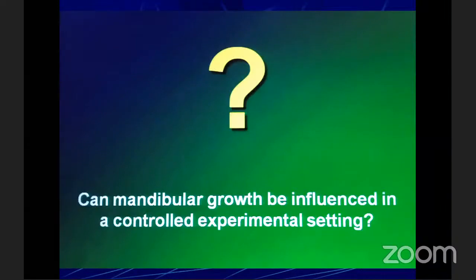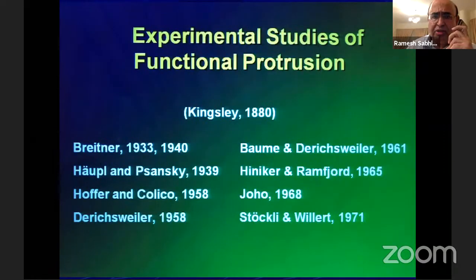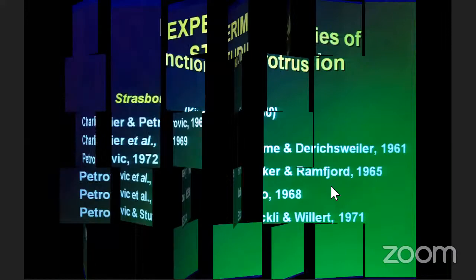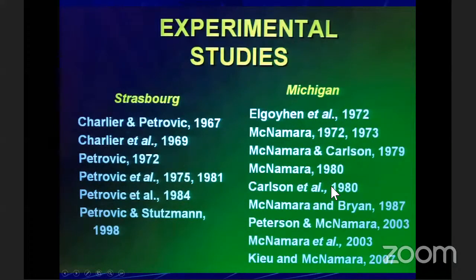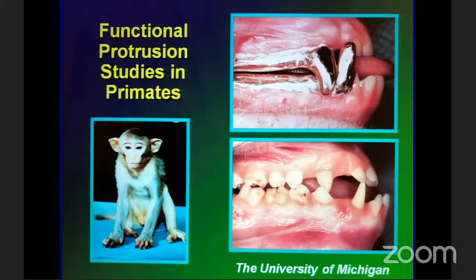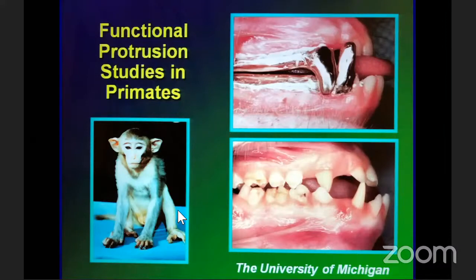Can mandibular growth be influenced in controlled experimental settings? There are studies done from the time of Norman Kingsley in 1880, and many studies done on primate monkeys from Brittner and Hoppel in the 1880s. The main work was done by Jim McNamara in Ann Arbor, Michigan, and also by Alexander Petrov in France and Sturzman in Strasbourg, Germany, who did studies on the length of the mandible in monkeys. Jim McNamara's classical study, his PhD thesis, used tyconium inclined planes in monkeys, moving the lower jaw from a Class 1 to Class 3 position, and examined the changes in condylar cartilage.